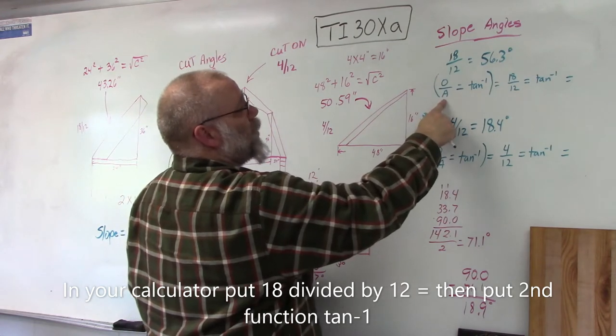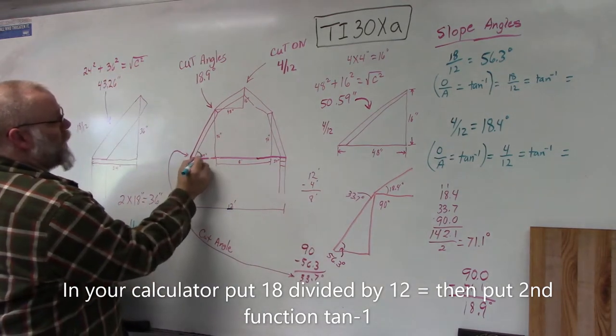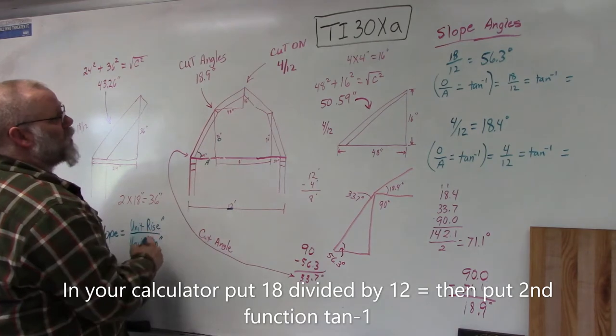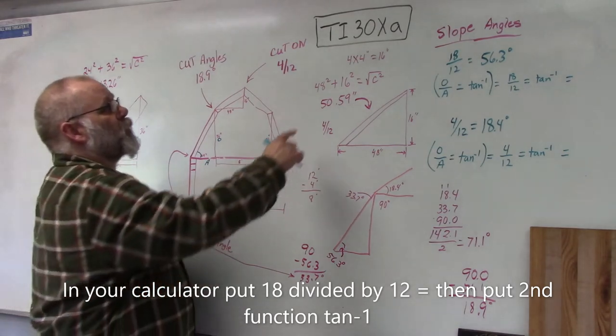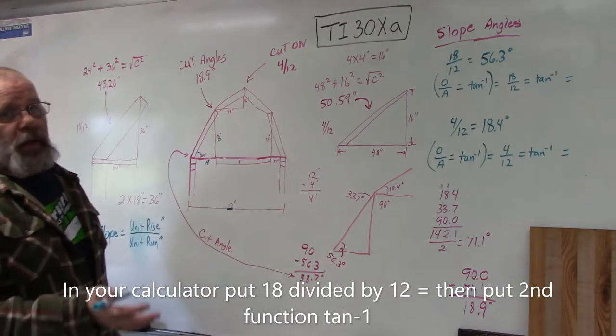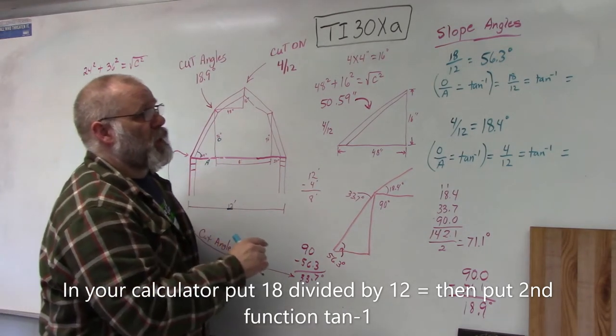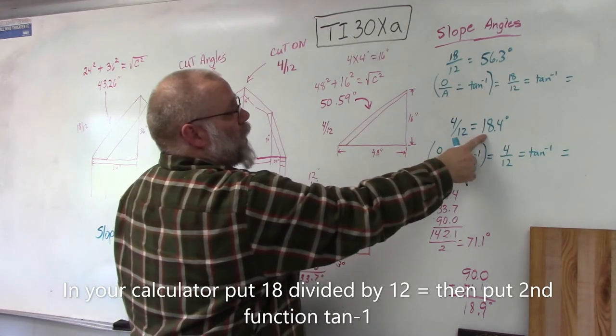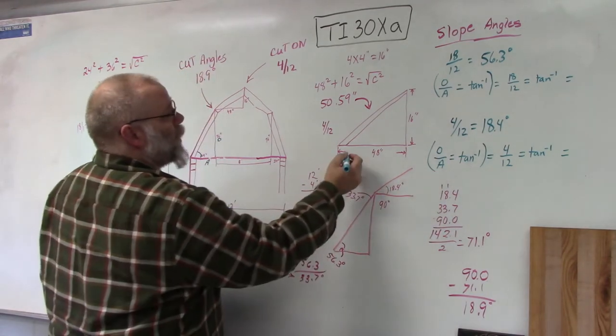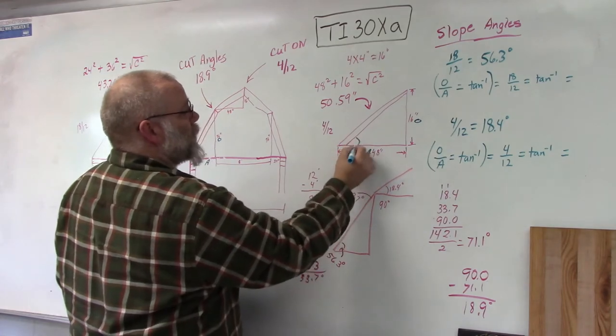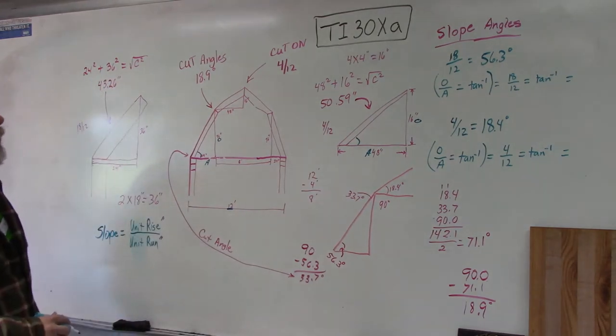To figure that angle in your calculator, you use your opposite angle over your adjacent angle inverse tangent. The calculator I'm using is a TI 30 XA, it's like $10 at Walmart. My other angle for my upper is going to be 4/12 and I figured it out to be 18.4 degrees, again using the same equation opposite over adjacent.